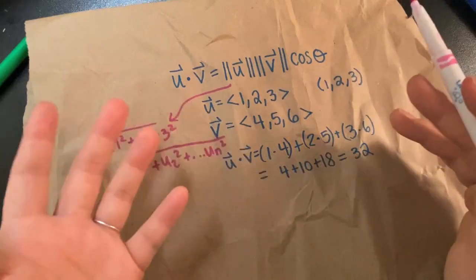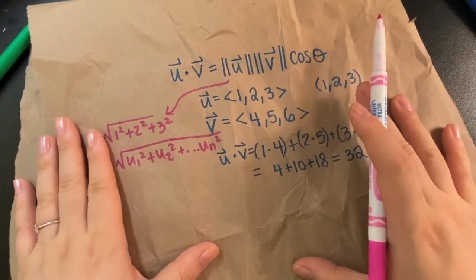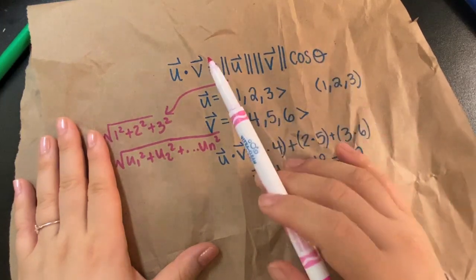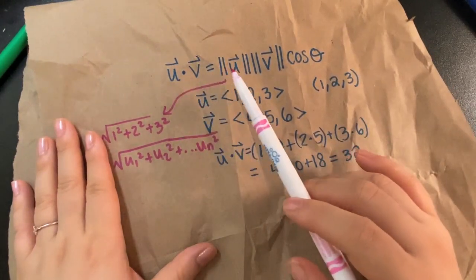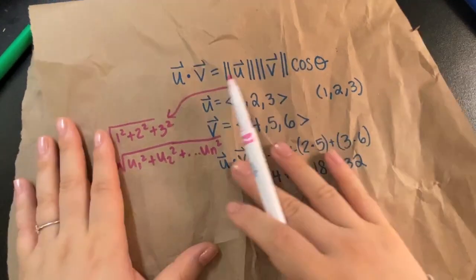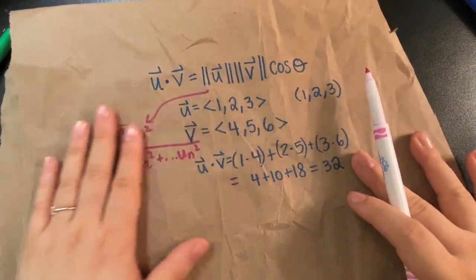So you can divide them over to get cosine of theta. And then most often you'll need to just take the inverse of cosine, which is inverse cosine of whatever this number is. But you can just do that on a graphing calculator or whatever.